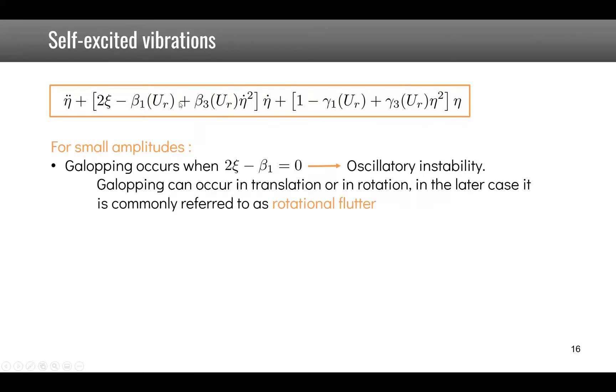Now if we apply this to our problem of self-excited vibrations what we see is that if the damping becomes negative then we will have some oscillatory instability. Here we will consider just to look at the stability limit the first two terms so when 2 psi minus beta 1 is equal to 0 we have a damping that becomes negative, this part is negligible for the moment.